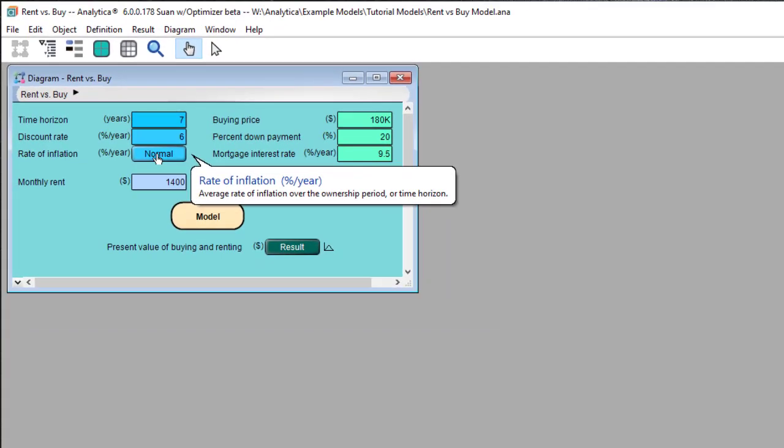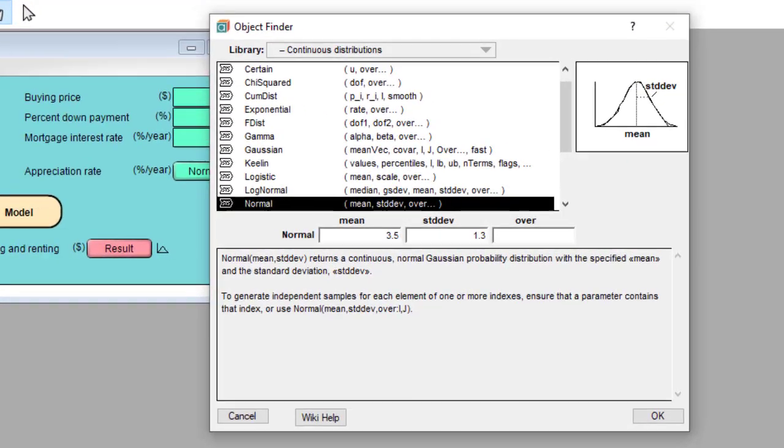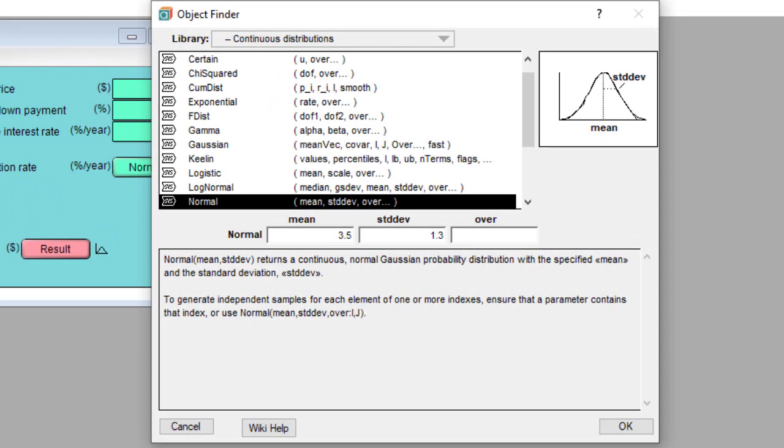When you click on that button, the object finder opens. This is a window that lets you look at the details of this distribution, such as its description and its parameters, which you could also change here.